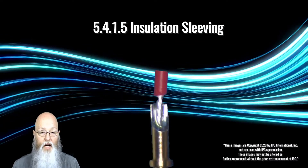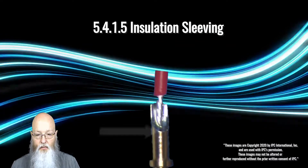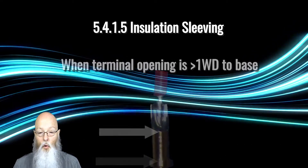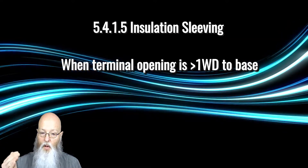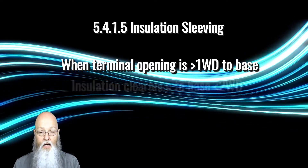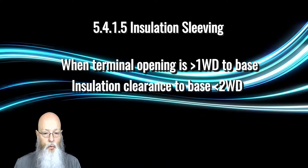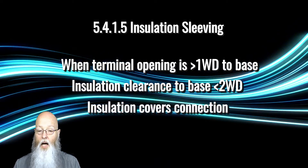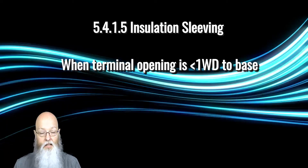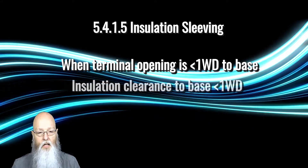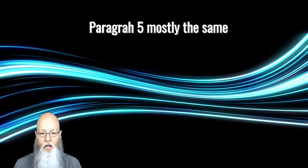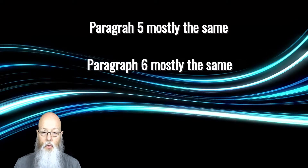5.4.1.5 is now Insulation Sleeving. There is a further breakdown of insulation clearance in relation to the base spacing of the terminal. When there is more than one wire diameter distance from the bottom of the terminal opening and the surface or other potting on the base of the terminal, then the insulation clearance shall be less than two wire diameters, and the insulation must go past the solder connection. When the distance from the bottom of the terminal opening to the surface or potting is less than one wire diameter, then the insulation clearance has to be less than one wire diameter. The balance of paragraph 5 is mostly the same, as are the criteria in paragraph 6 through-hole connections.